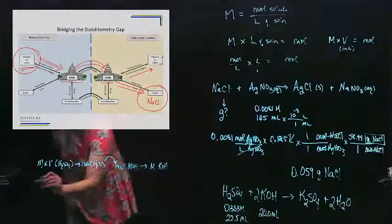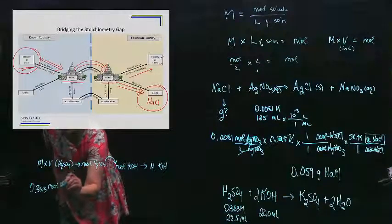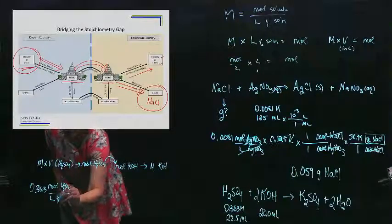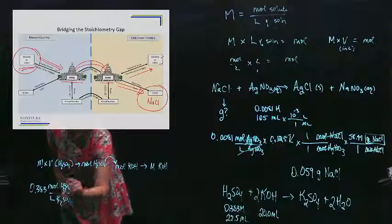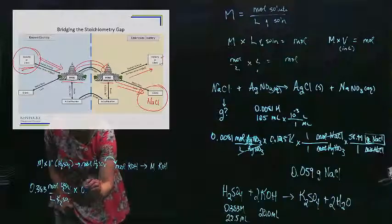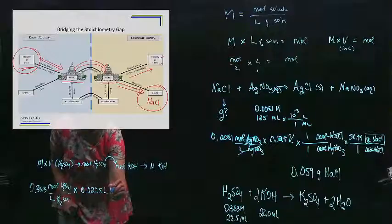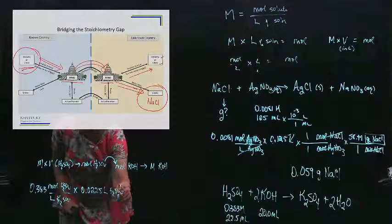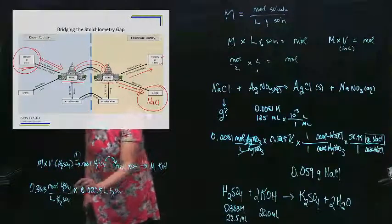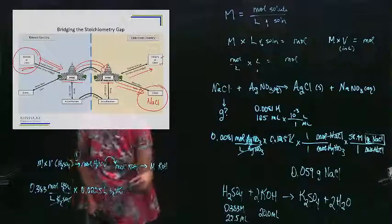Molarity. 0.383. Write it out. Moles of H2SO4 per liter. Molarity times the volume. What is the volume? 22.5 milliliters, or 0.0225 liters. That's liters of that sulfuric acid solution. So that's step one. That gets me to, canceling that, gets me to moles of H2SO4. Now I'm ready to do step two.